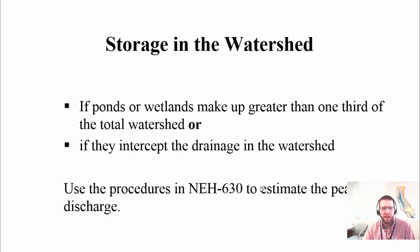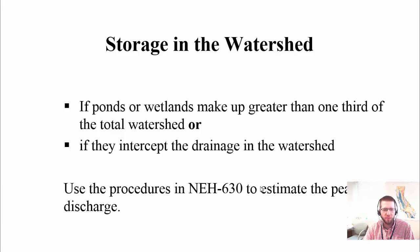One thing to consider is storage in the watershed. If there are ponds or wetlands in your watershed, you need to take those into account because water will collect in those areas instead of flowing straight down to your design point. You can use NEH 630 to estimate peak discharge in rural watersheds — they have adjustment factors for ponds and wetlands. In urban watersheds with storage, you should break it up into sub-watersheds and use a modeling program such as HydroCAD.